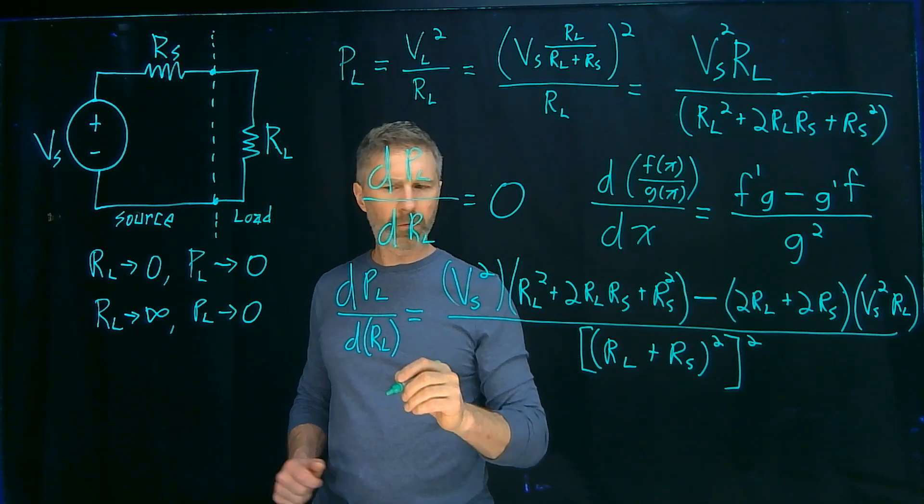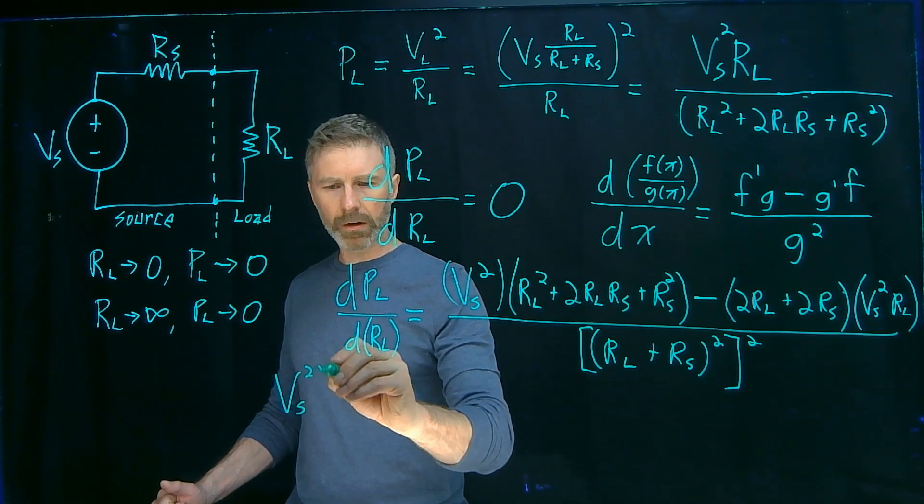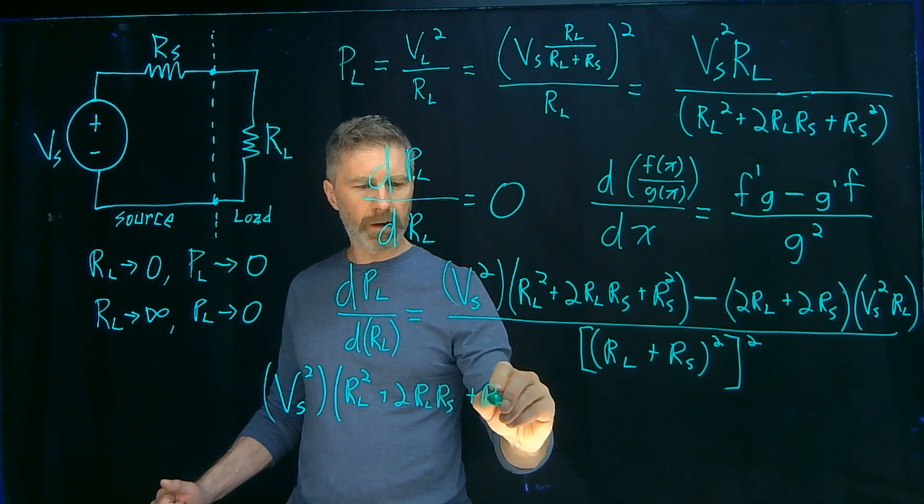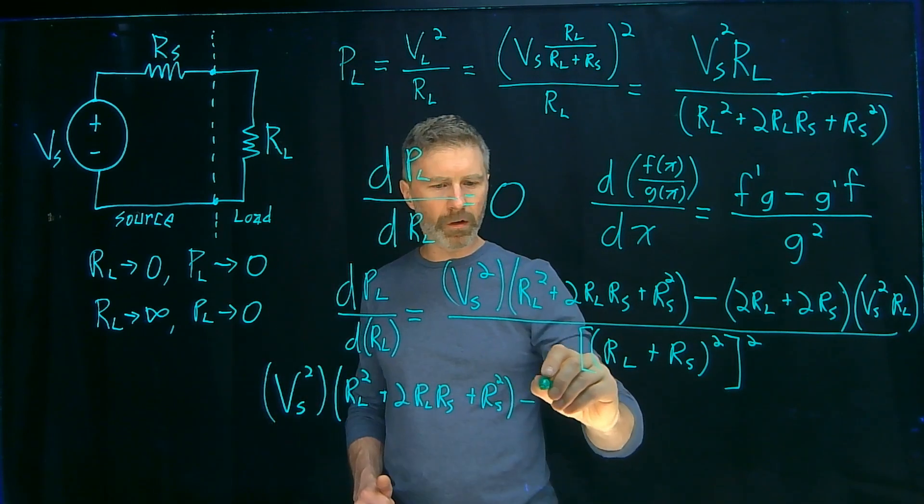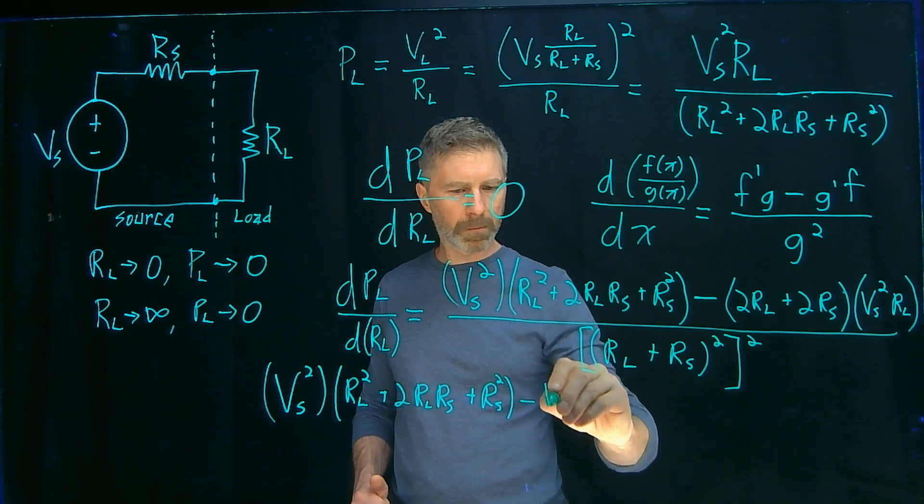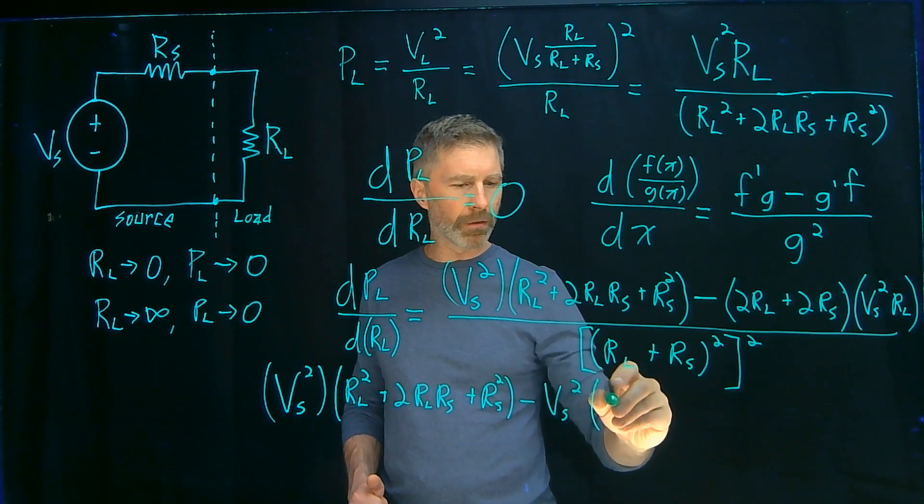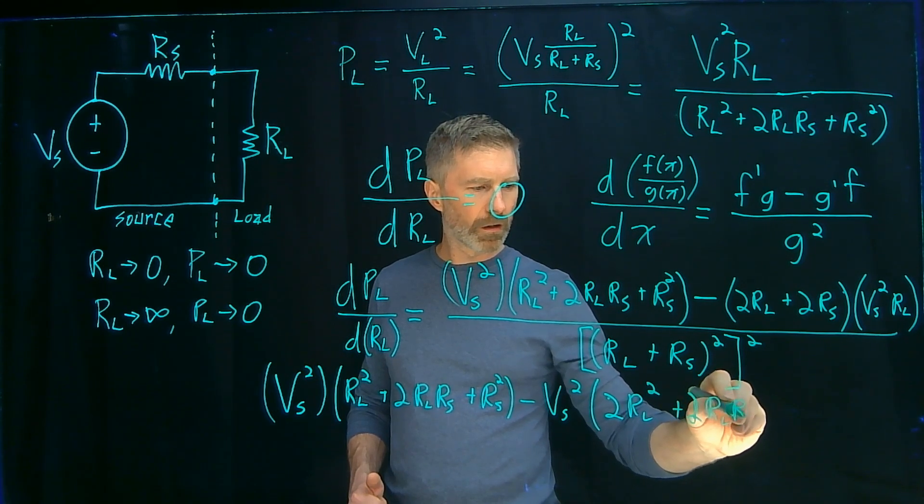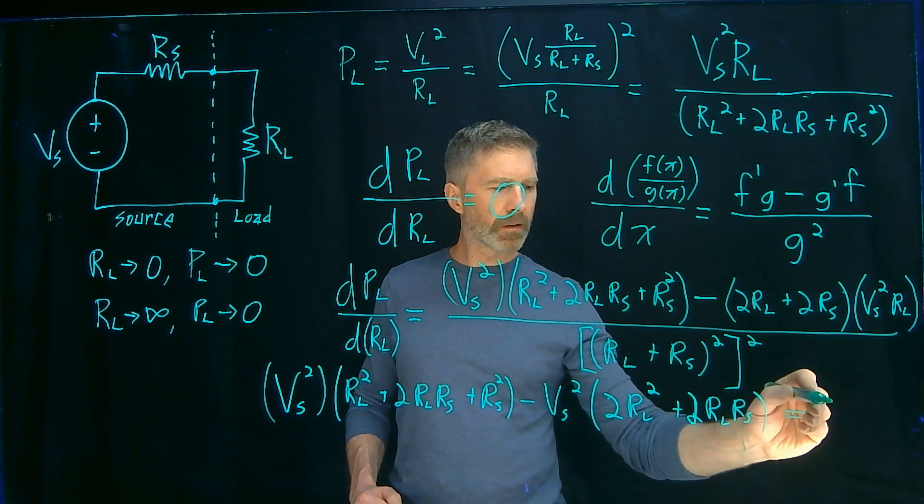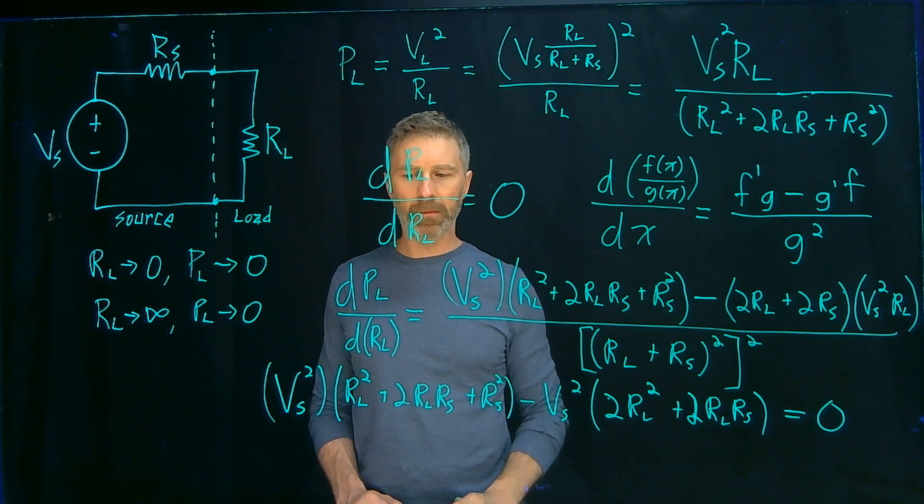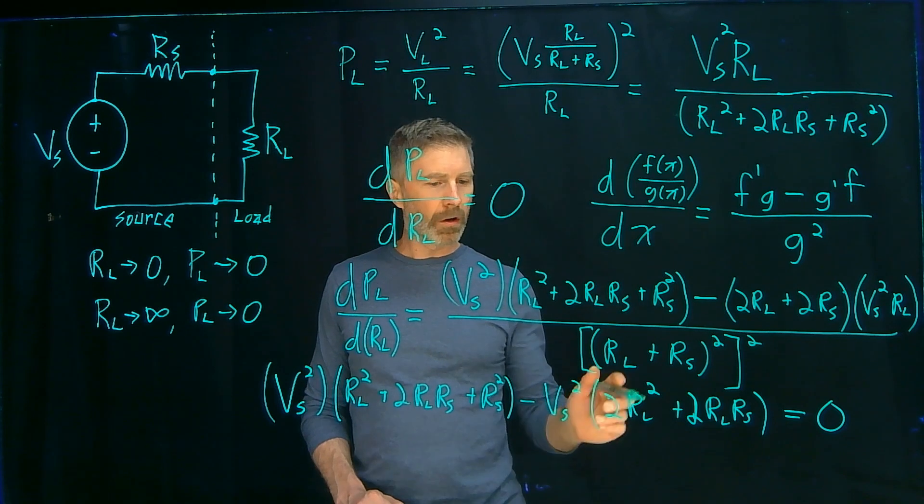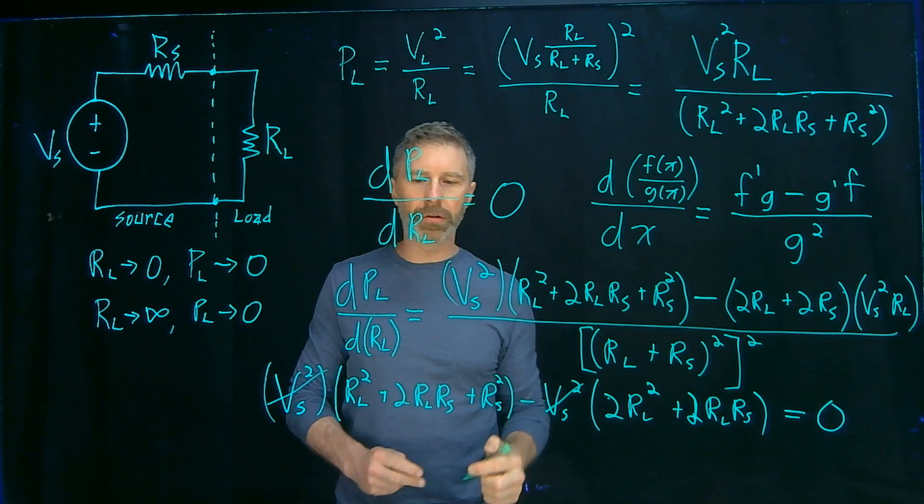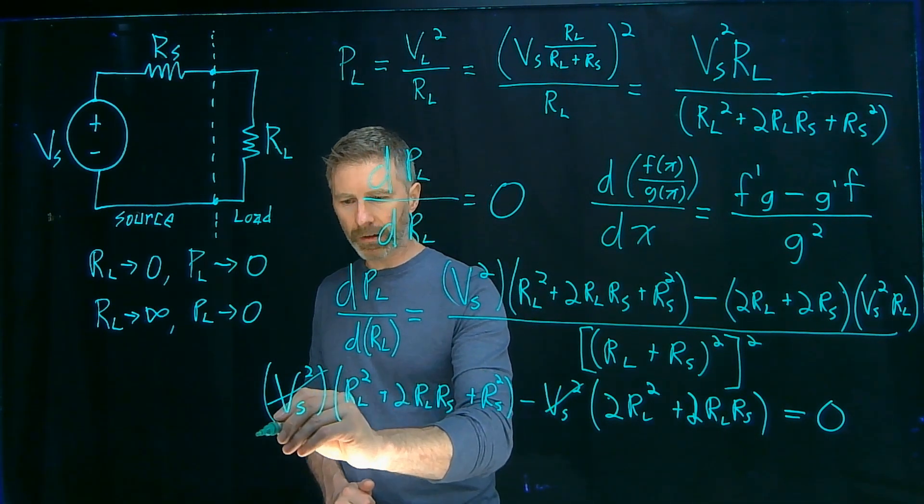So basically what I want to do is set this to zero and then solve for RL. So I'm going to rewrite the numerator and rearrange things a little bit. So I've got Vs squared times RL squared plus 2RLRS plus RS squared minus, I'm going to bring this Vs squared to the front. And then distribute this RL in through this part of the equation. So I'm going to get 2RL squared plus 2RLRS. And that, when that's zero, then I found the maximum. So now I want to solve for RL. One thing I can notice, if I divide both sides of the equations by Vs squared, then these terms go away because they're constants that are in both of the terms. And now I can write this out without the brackets, and we'll see that a lot of stuff goes away.